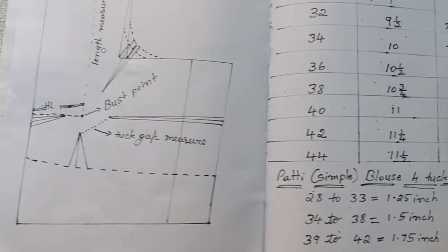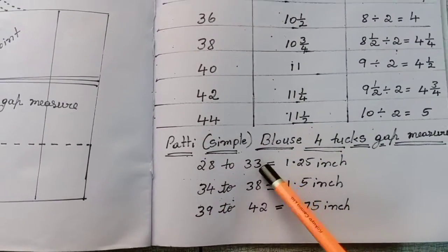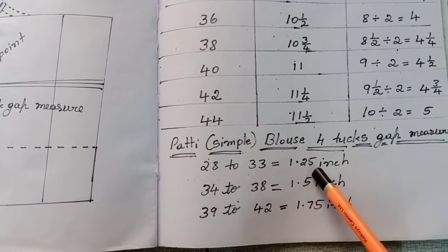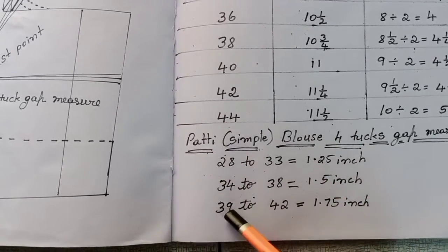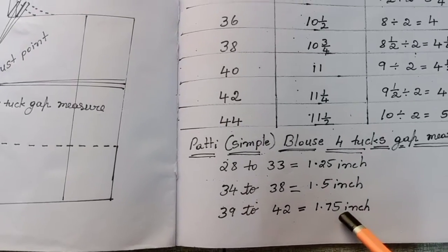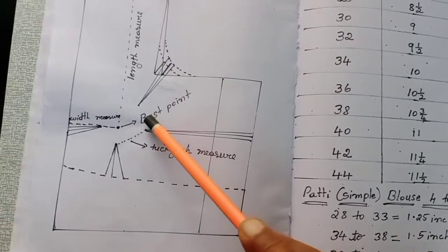For example, the gap measure is 28 to 33, 1.25 inches. 34 to 38, 1.5 inches. 39 to 42, 1.75 inches. This is the correct number of the tucks.